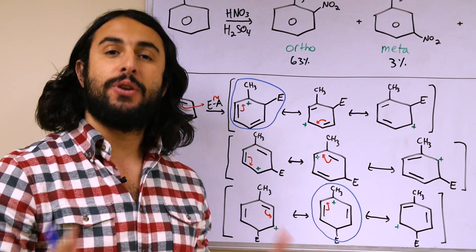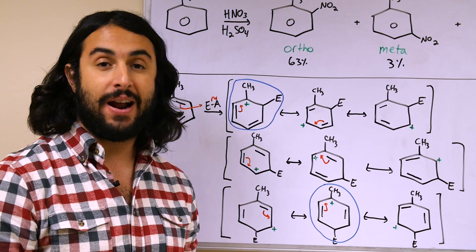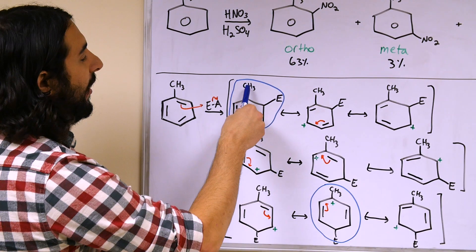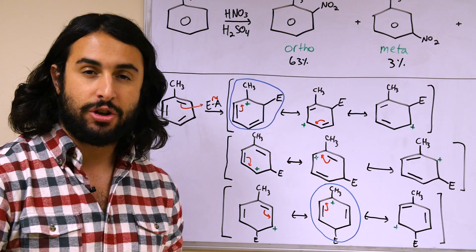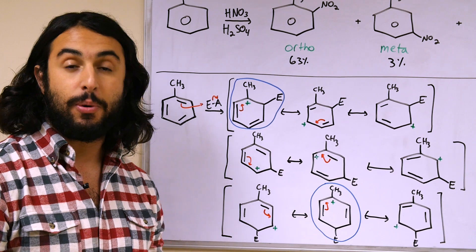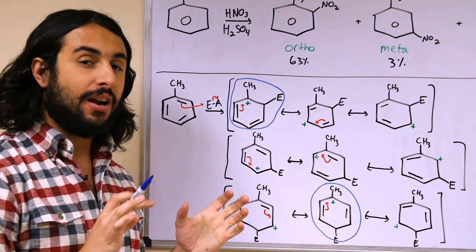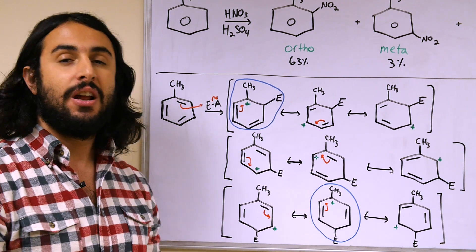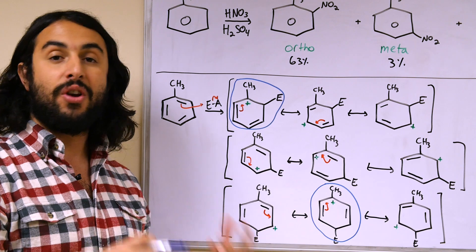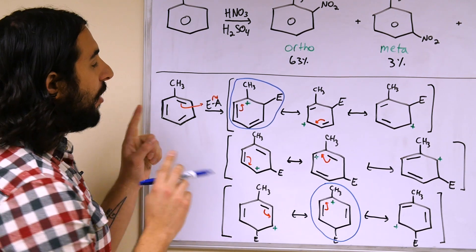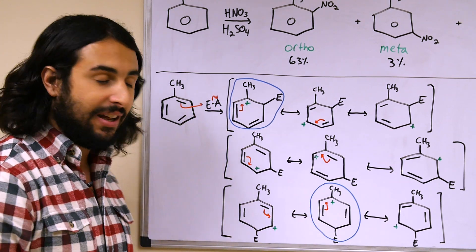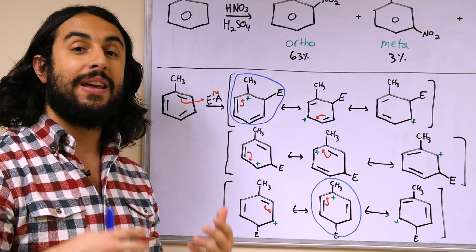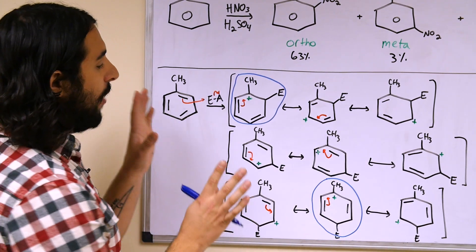Different kinds of substituents are ortho/para directing, and what they have in common is that they tend to be electron donating groups. The alkyl group is electron donating by hyperconjugation. Other groups such as hydroxyl or amino are ortho/para directing because they are electron donating by resonance — they actually donate lone pairs. By contrast, groups like carbonyl-containing groups or nitro groups are electron withdrawing by resonance, and those actually favor the meta pathway, making them meta-directing groups.